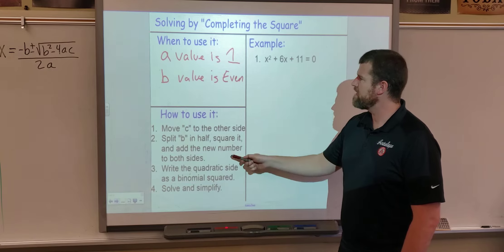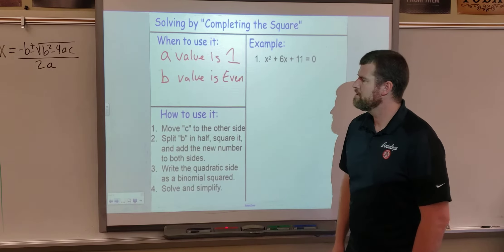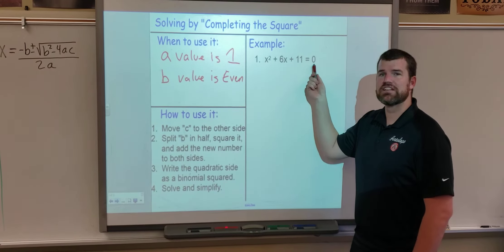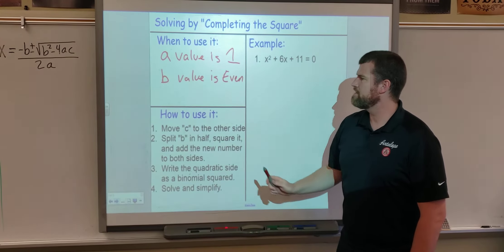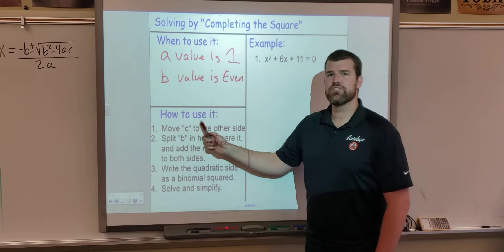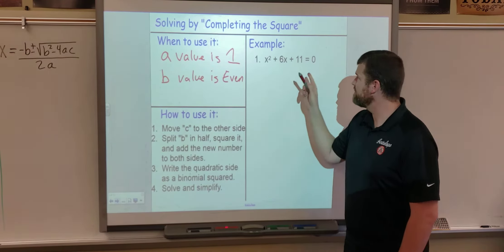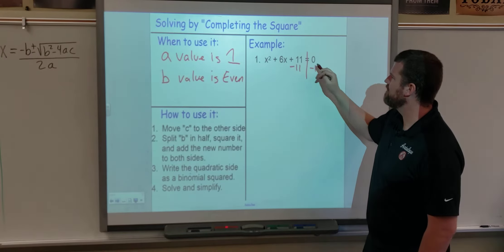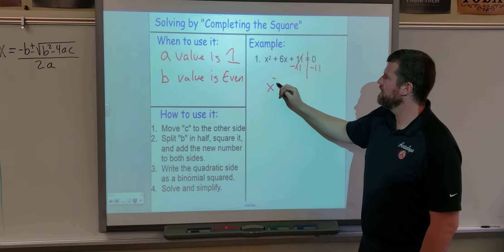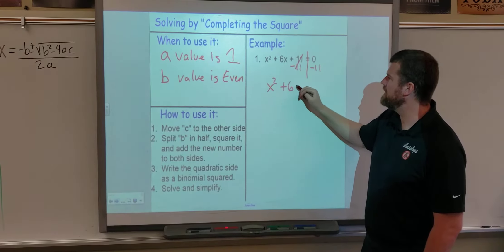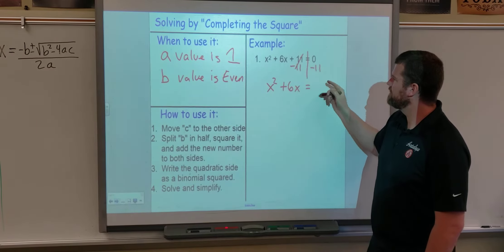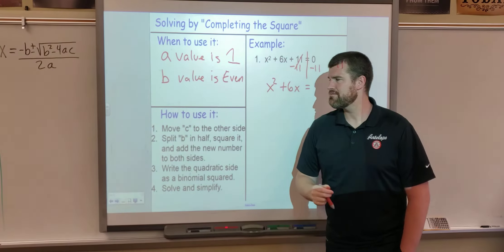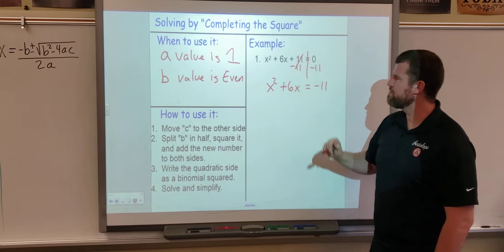We'll go through the steps as we do this first example. The first thing is, instead of standard form — which is equal to zero — we actually want the c value to be on the other side. So instead of equal to zero, we're going to move the c value to the right side and leave only our a and b terms on one side; c goes to the other.